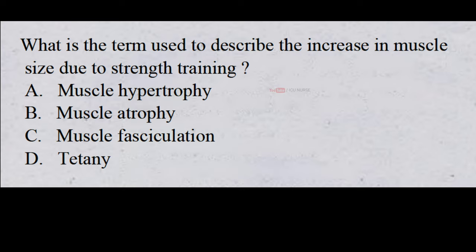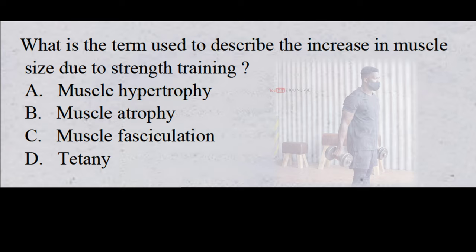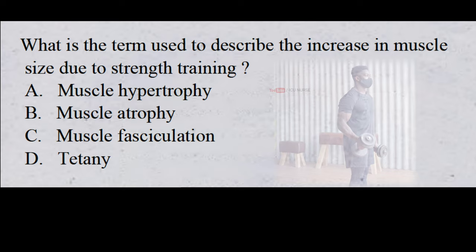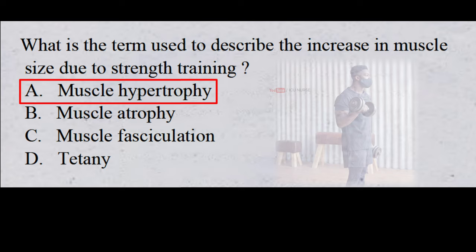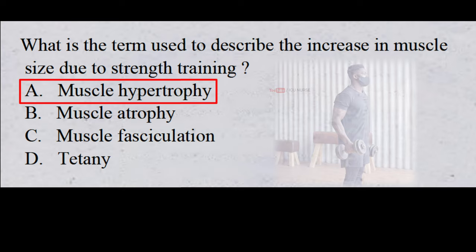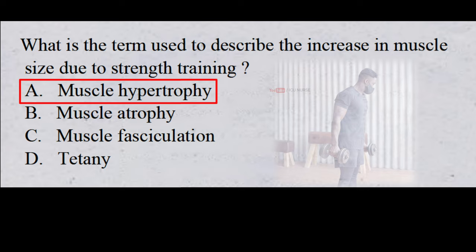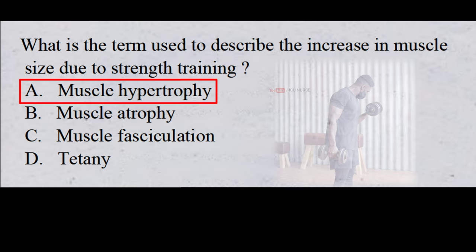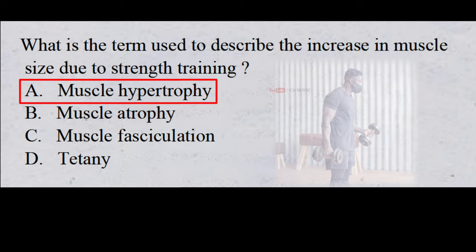What is the term used to describe the increase in muscle size due to strength training? A. Muscle hypertrophy. B. Muscle atrophy. C. Muscle fasciculation. D. Tetany. And the correct answer is A. Muscle hypertrophy. After strength training, the body repairs damaged muscle fibers by fusing them together to form new myofibrils, which increase in thickness and number to create muscle hypertrophy.